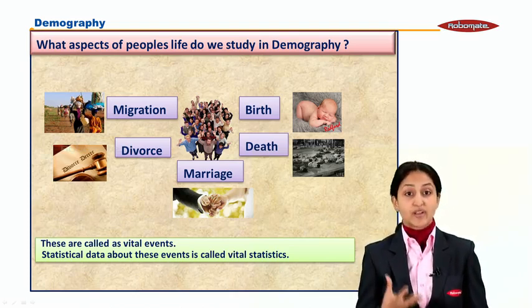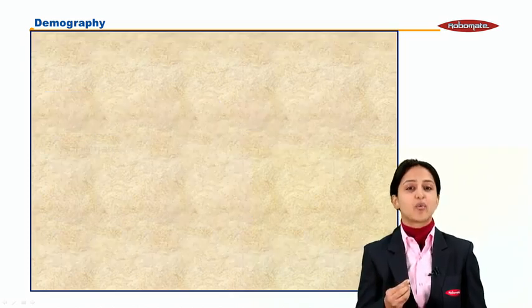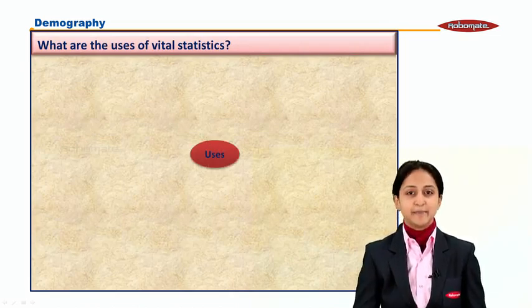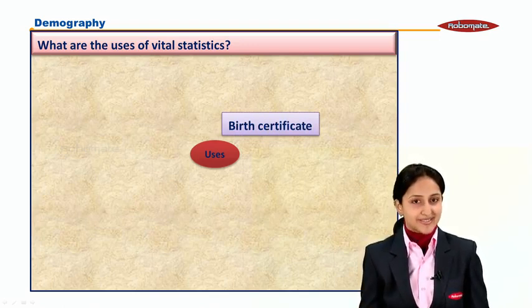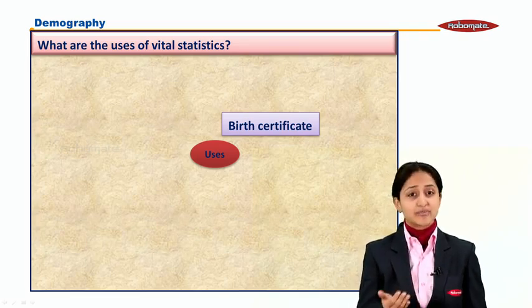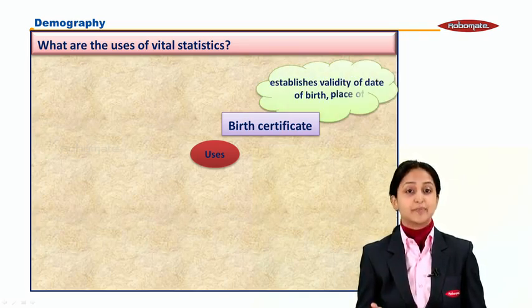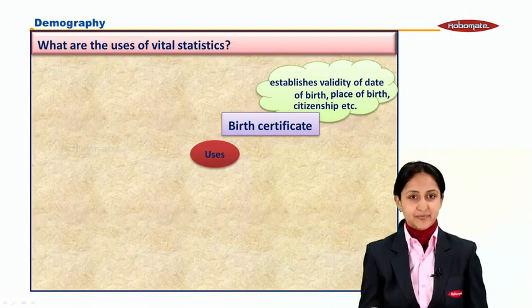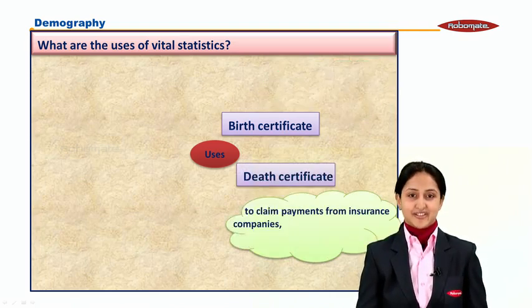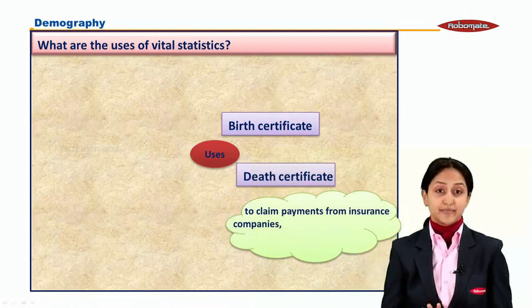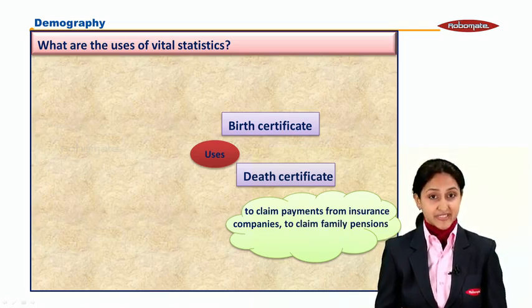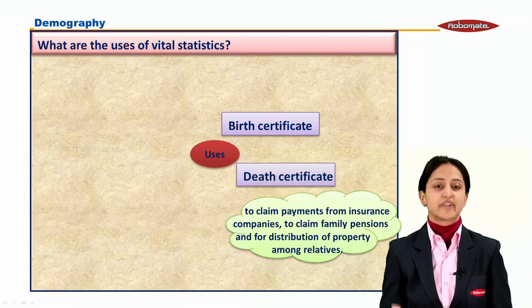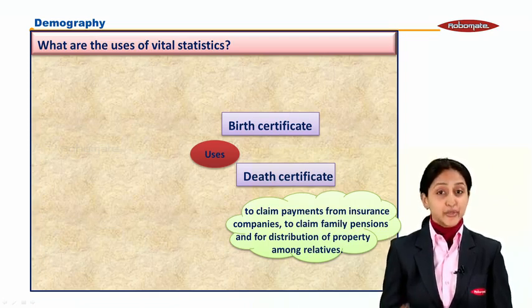Now let's look at the uses of these vital events. The very first vital event was birth. We have a very important document called a birth certificate — that is how we record birth. It tells us the date of birth, the place of birth, and the citizenship of the person born. Similarly, death is also recorded with the help of a death certificate. This certificate has a lot of legal importance — it helps you claim payments from insurance companies, claim pension benefits, and is important for distribution of property among relatives once a person dies.